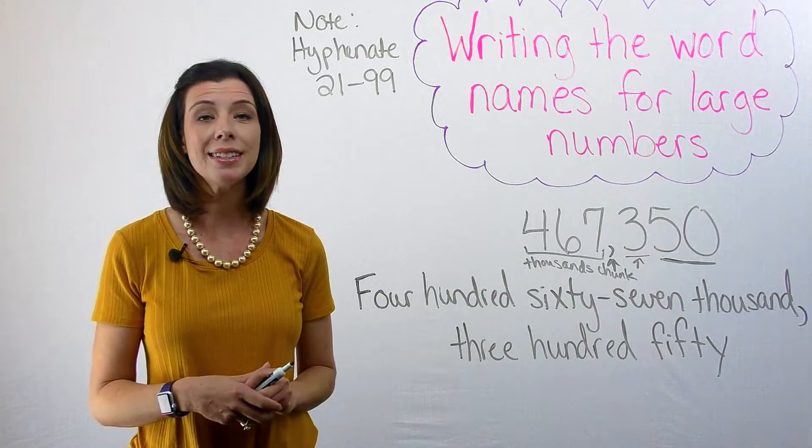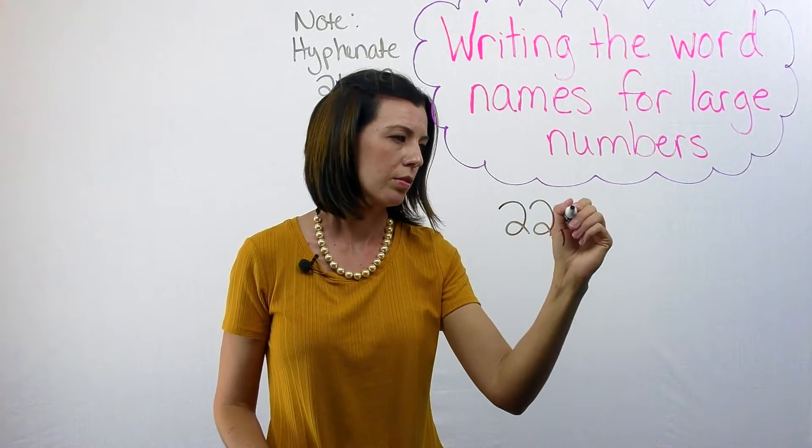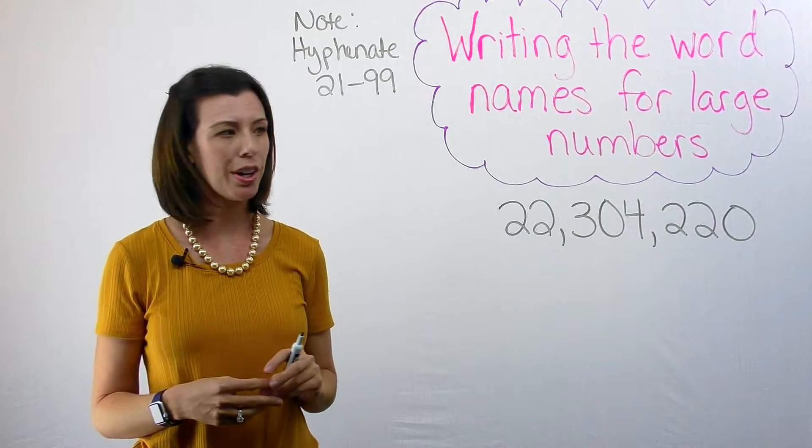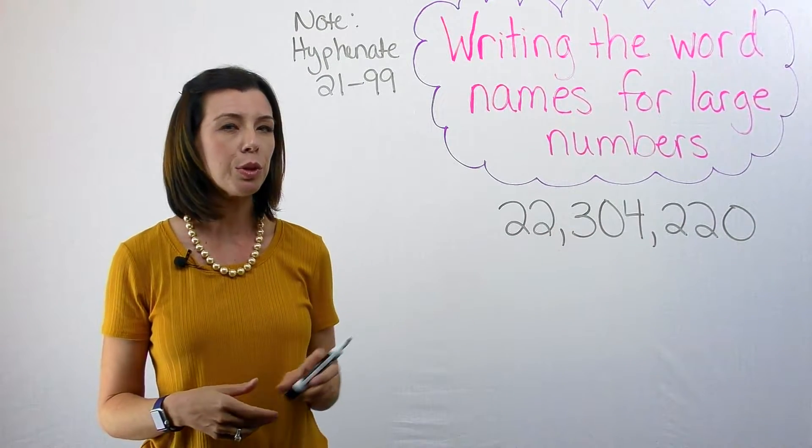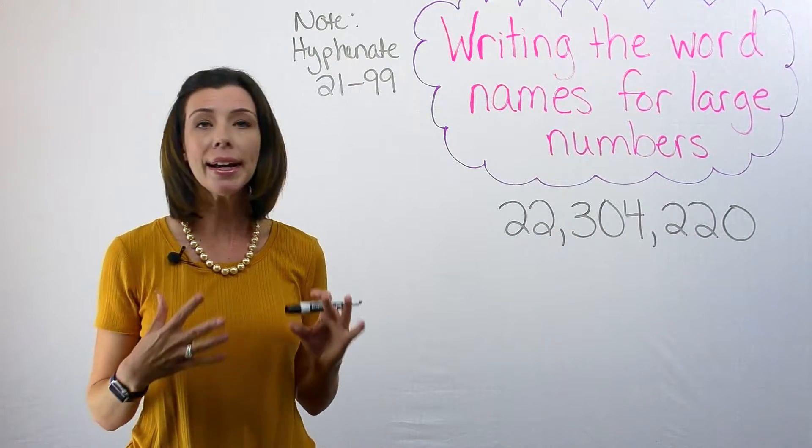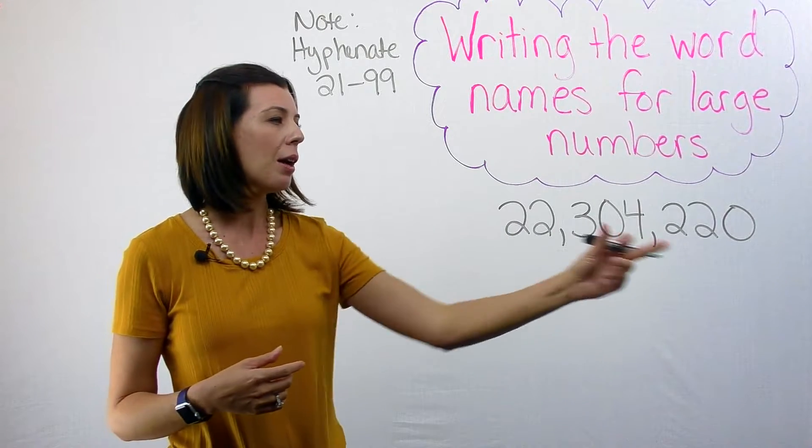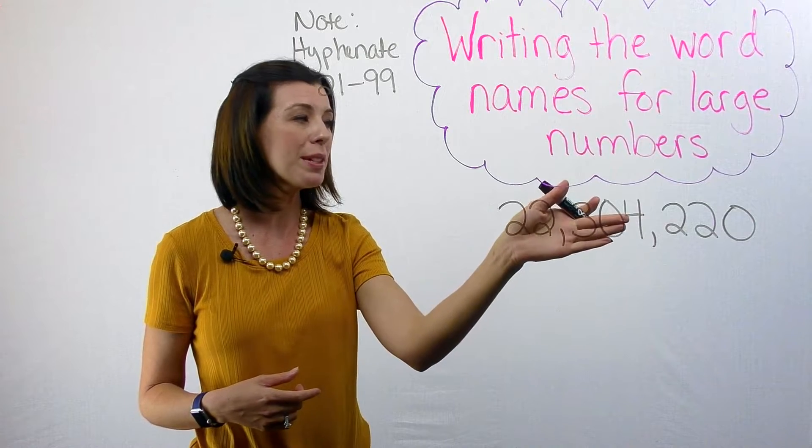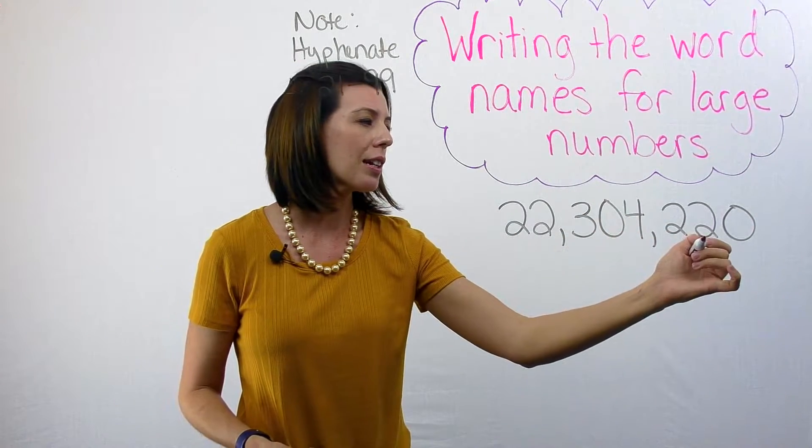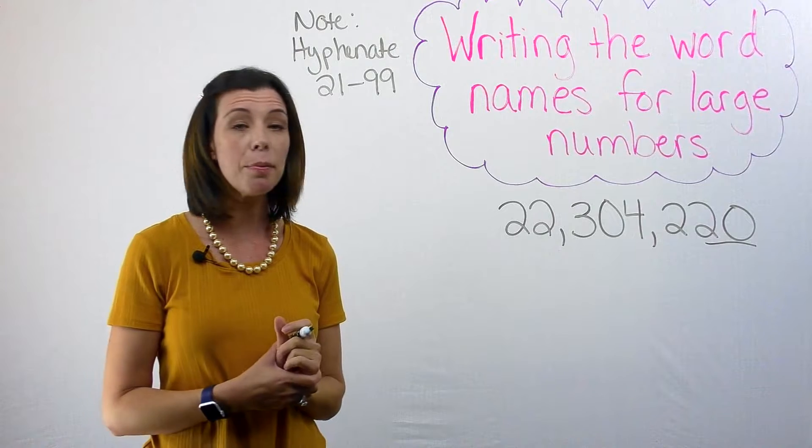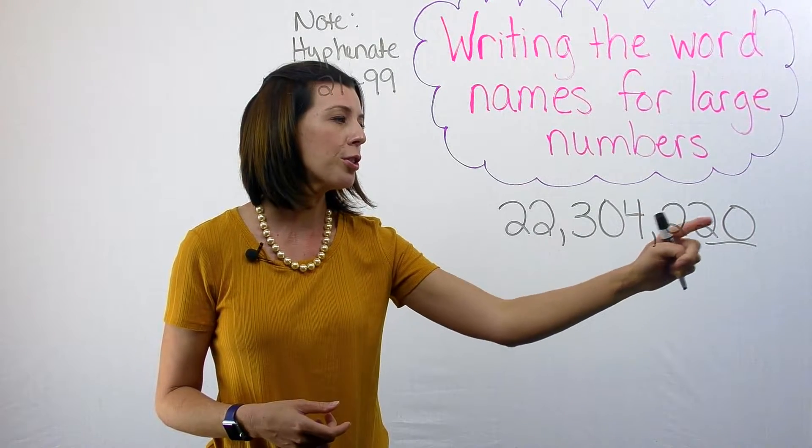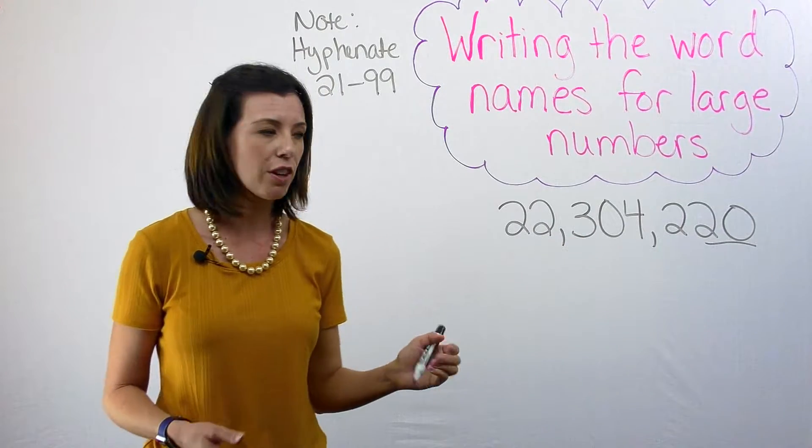Let's try one that ends in the millions. So this number is a lot larger. And we've got this zero here, which could be a little tricky. So again, let's follow the same steps. I want to start with my hundreds chunk here and just pretend that that's all by itself. So again, I start with the last two digits, and that would be the number 20. And I know that I have 220. So I'm going to write that first.